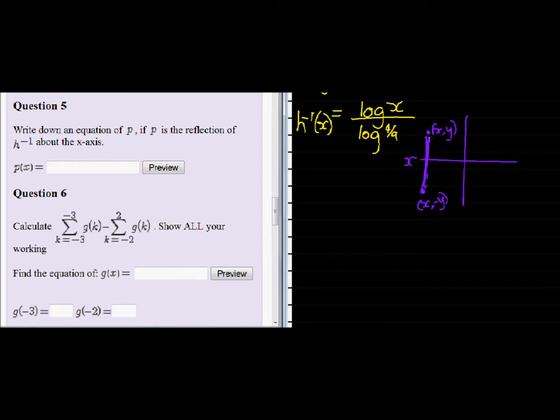We see that x stays the same, but the y-value goes to the negative side, which means that y is multiplied with a negative.